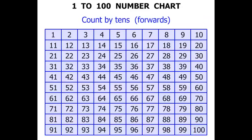We might not always have to start at 10 though. Let's say we started at 17. From there we'd go 27, 37, 47, 57, 67, 77, 87, and 97. So these sort of patterns you can see.